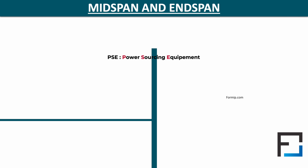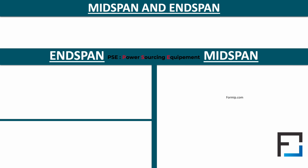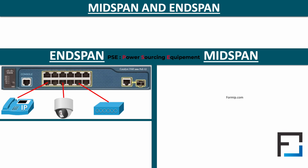To provide power, there are two options: the end-span and the mid-span. The end-span PoE method uses a switch with built-in PoE. Typically on Cisco switches, the ports that provide power are framed in yellow. When a device is connected to the switch, it will be detected automatically if it is PoE enabled — if so, the power will be turned on. PoE switches come in a variety of sizes, and only certain ports may be PoE enabled.